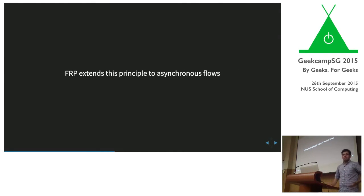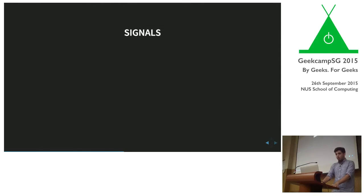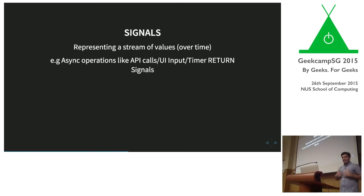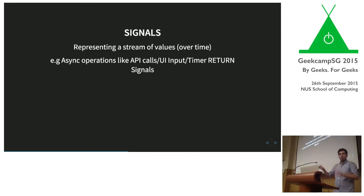The main concept in FRP is to apply this principle of composability to asynchronous flows. The way we do that is through this concept of a signal. That was the pun in the title: 'Signaling on a Callback Help.' A signal represents a stream of values over time. My asynchronous operations — like an API call, a UI input, a timer — these things will return signals to me instead of me passing a callback function.